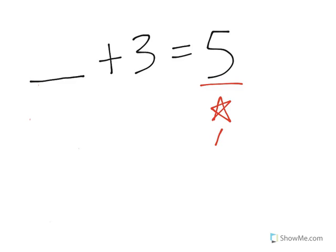Sometimes you might have a problem like this. Blank plus 3 equals 5. Now here we know how many we end up with. We end up with 5 stars or whatever the object may be. We end up with 5 of them. There are 5.